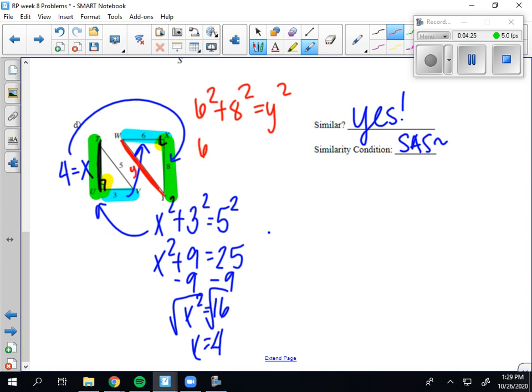So 36 plus 64 equals y squared. So that would be 100 equals y squared. And then if you take the square root of both sides, y equals 10. And then you could say that they're similar by side, side, side. So either way, you do have to do more calculations to know that they're similar.